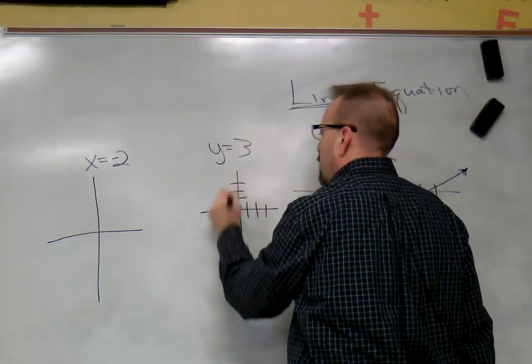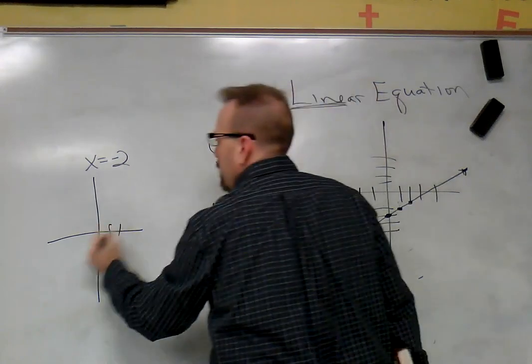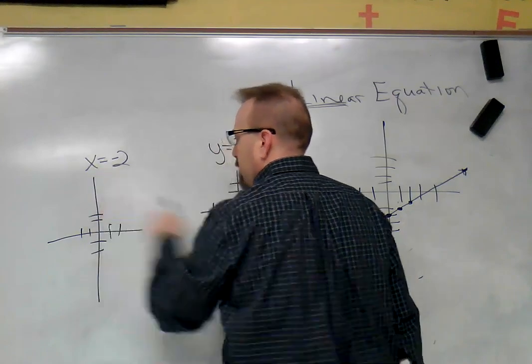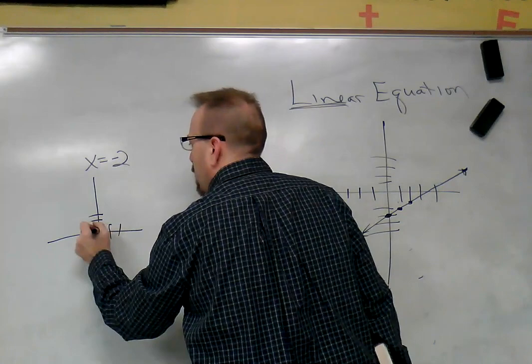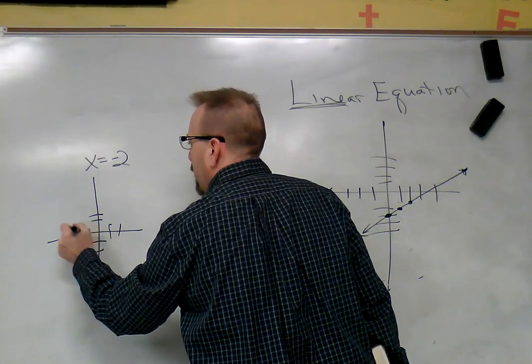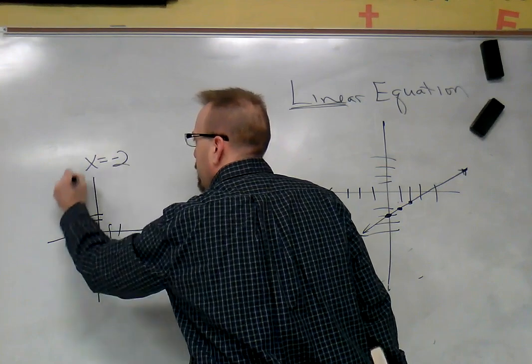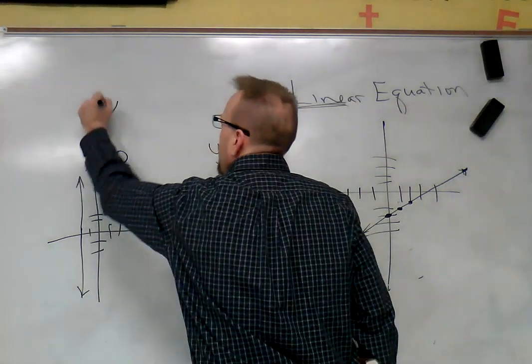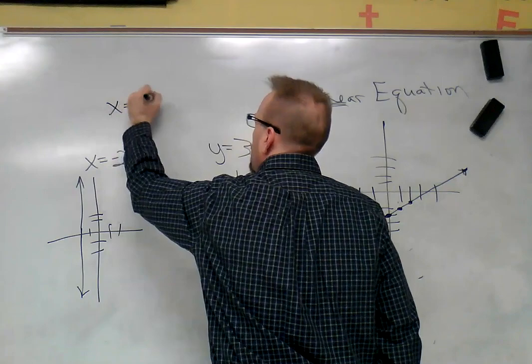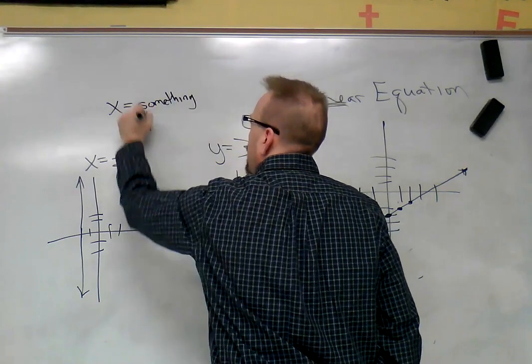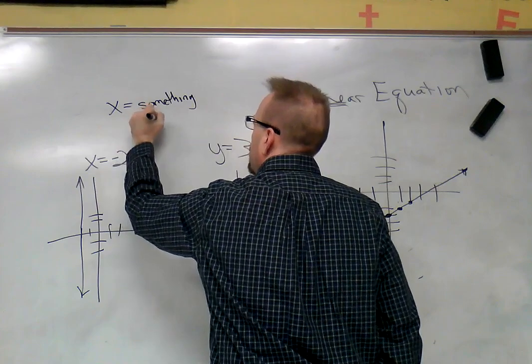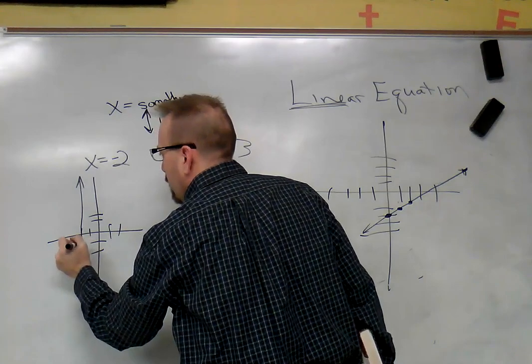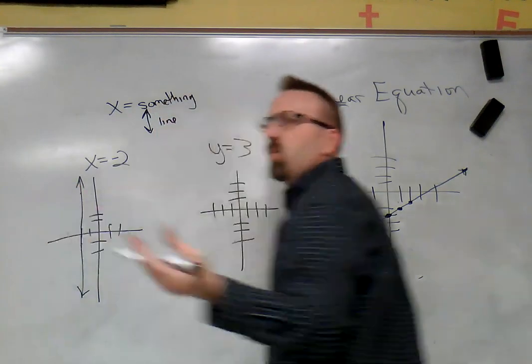Let's look at these graphs. Over here, this says x is -2. Which way is x? Is it up and down or side to side? It's side to side. So here x is zero, here x is -1, here x is -2. So we're going to go straight up and down at x equals -2. So if it's x equals something, our line is a vertical line. If we put a point here, it's (-2, 1), (-2, 10), (-2, 11), something like that.